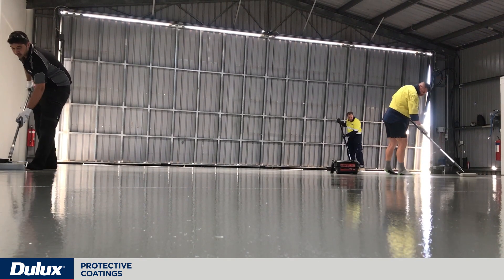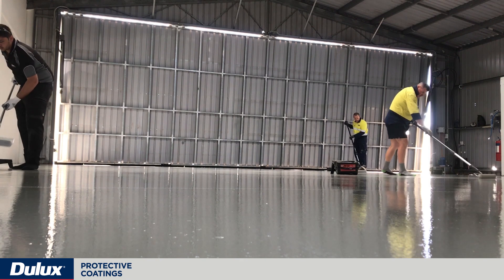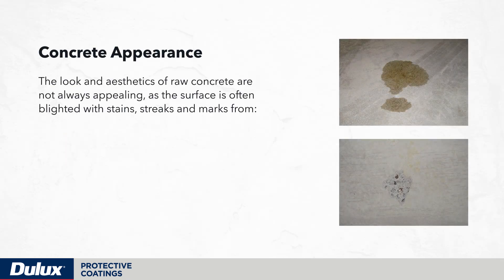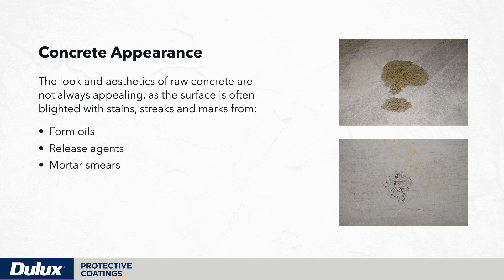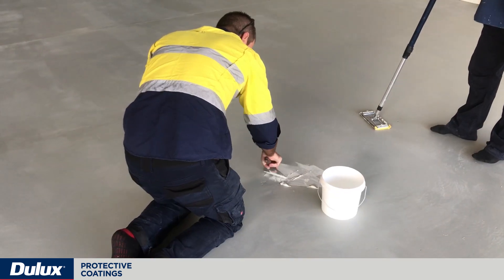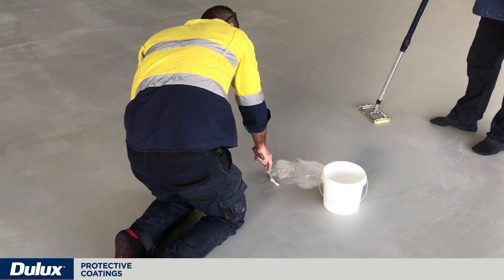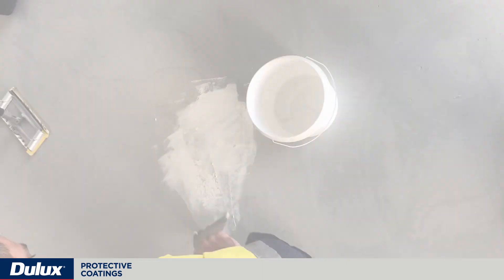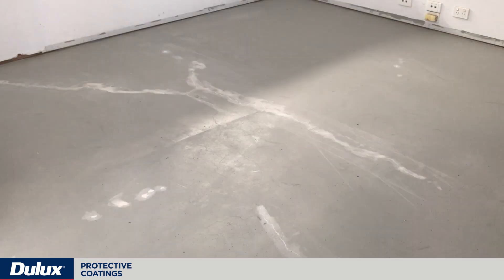Unpainted concrete does have drawbacks, all of which can be overcome by the application of a protective coating system. The look and aesthetics of raw concrete are not always appealing as the surface is often blighted with stains, streaks and marks from form oils, release agents, mortar smears, site damage and wear and tear. Imperfections arising from blowholes, honeycombing and on-site damage affect not only the aesthetics but also the integrity of the concrete itself and will require filling and patching.